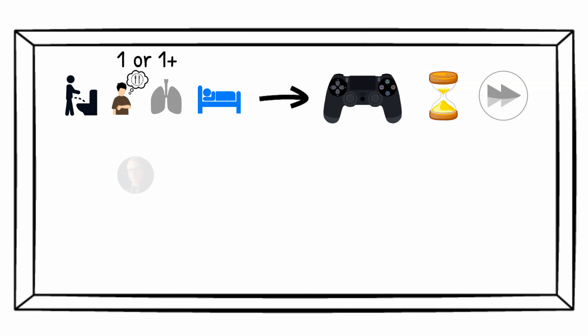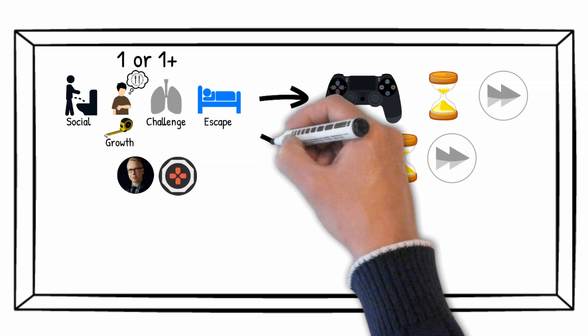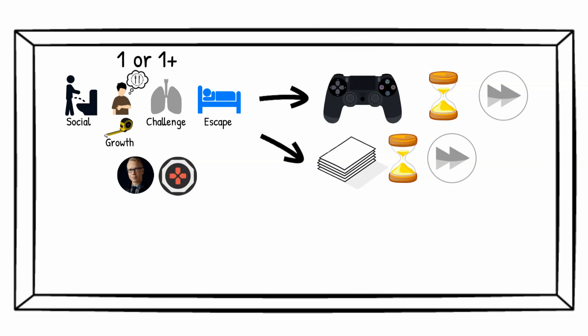As Cam Adair from the awesome brand Game Quitters puts it, those four needs are social, constant measurable growth, challenge, and temporary escape. If you'd like to be engaged in your content the same way that you were engaged with this video game, using any of those to your advantage by satisfying them through your production process may help you.